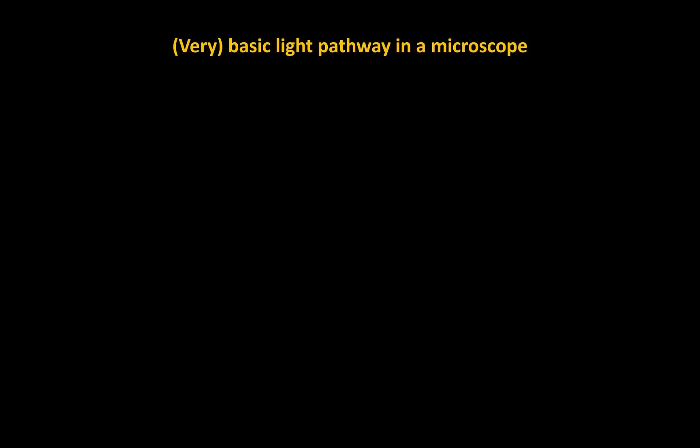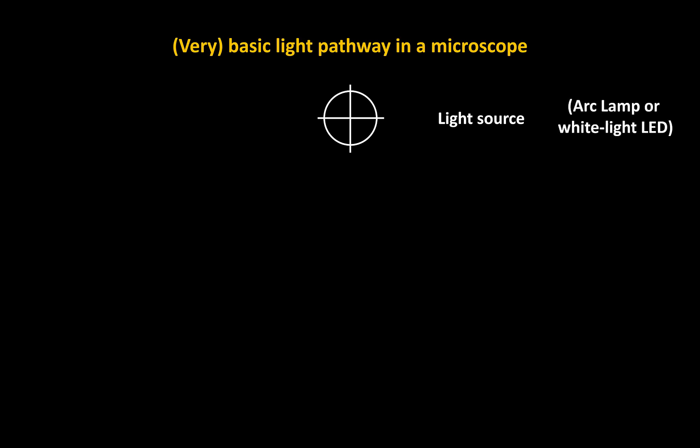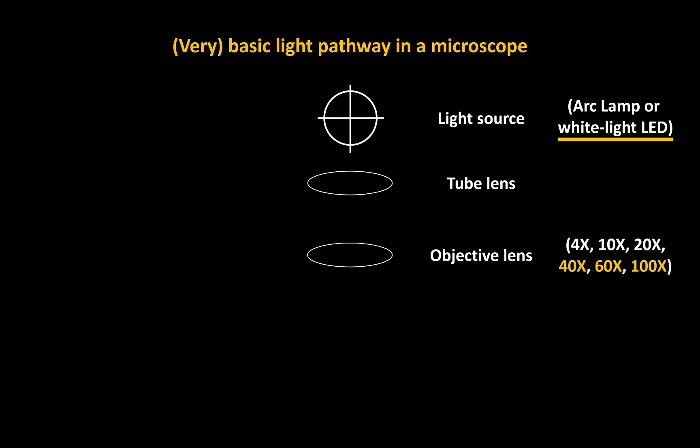Let's begin with what's a wide field system. I like to begin with just a very basic light path for a microscope. We start with a light source that is going to give us the light we need for fluorescence excitation. This light source for a wide field setup is traditionally done using an arc lamp or a white light LED. Bach uses a white light LED, and it's white light because ultimately we're going to take that white light and with filters we can isolate specific colors of light to excite our sample with whatever we want. After the light source, we send that excitation light through a series of different lenses — most importantly an objective lens.